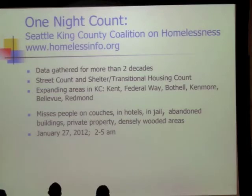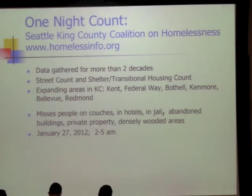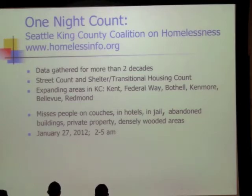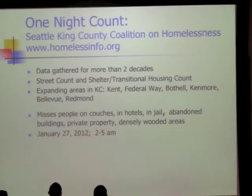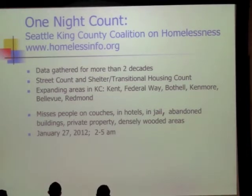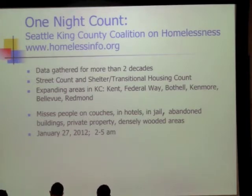The One Night Count has been going on in Seattle for about two decades. Across the nation on one night a year, large urban areas try to count how many homeless people are in their city — it helps with funding. The shelter and transitional housing count is fairly easy. For unsheltered counts, all of King County is divided into grids; teams go out between 2 and 5 AM and count people in cars, under bridges. They don't wake people up, they just count.